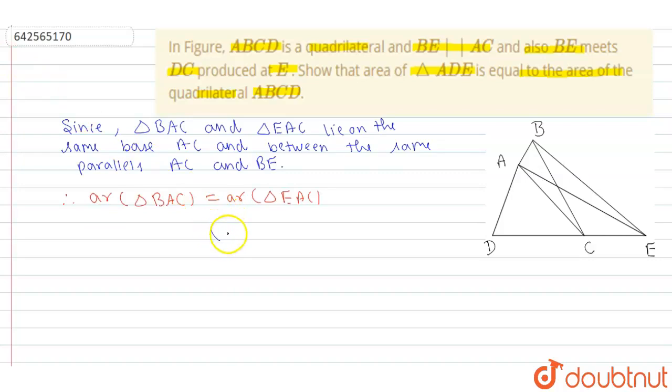Because we know that triangles with same base AC and between the same parallels are equal in area.